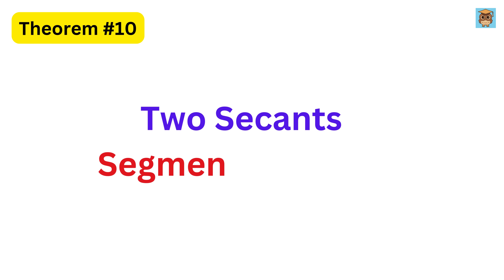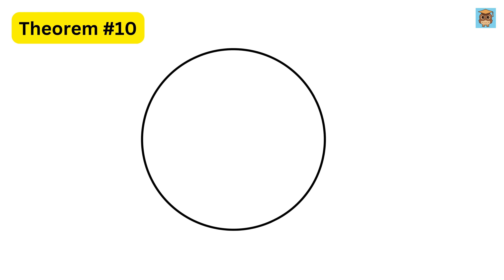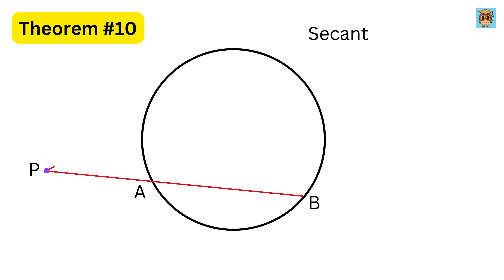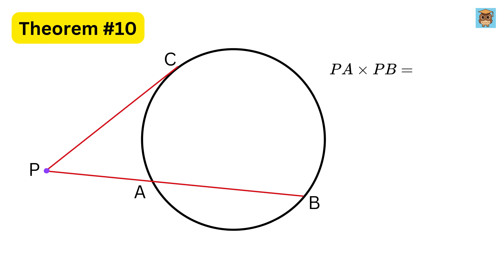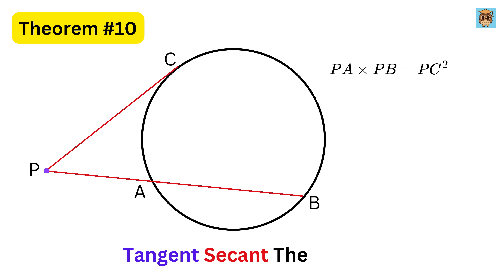Theorem ten: two secants segment theorem. Suppose we have a circle and an external point P outside the circle. From P we draw a secant line that intersects the circle at two points A and B, and we draw another secant line that intersects the circle at two points C and D. Then, according to the theorem, the product of the distances PA times PB will be the same as PC times PD. We can extend this theorem: if one line is a tangent that touches the circle at a single point C, then we have PA times PB equals PC squared. This is called the tangent secant theorem.